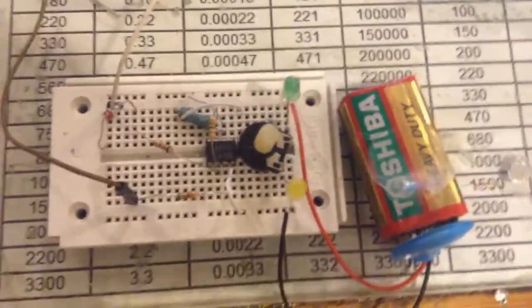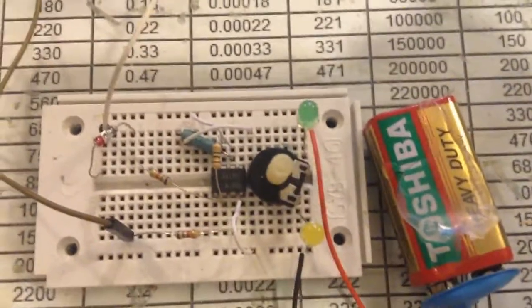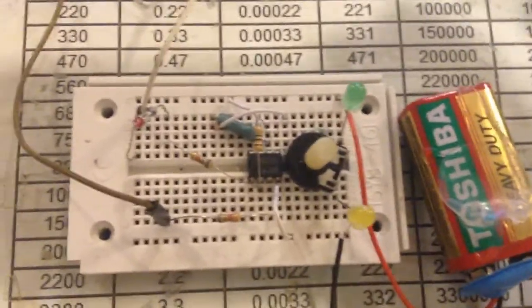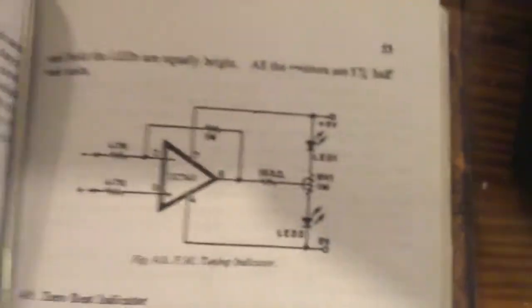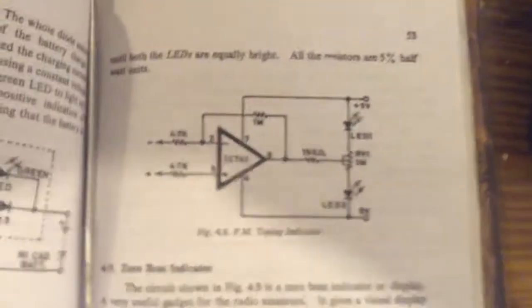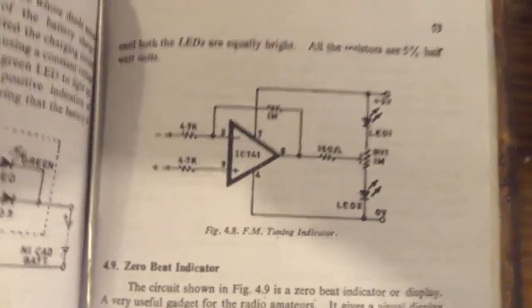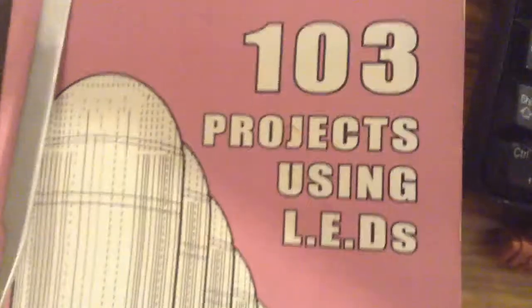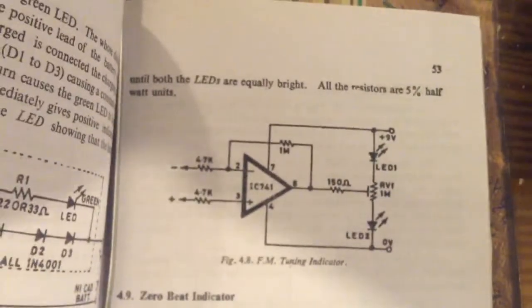It can work as a tuning project for FM transmitters or FM receivers, both. One more time, I will stay on the schematic for anyone who wants to take a screenshot and make this project. Thanks for watching. The schematic from 103 project using elements. Thanks for watching, goodbye.